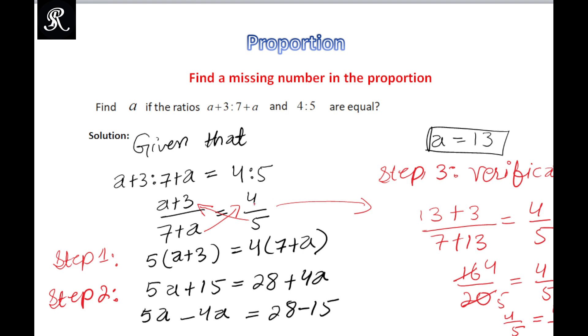So left-hand side is equal to right-hand side. This means this forms a proportion. As we have discussed in earlier videos, a proportion is where we compare two same ratios. So this means a equal to 13 is the solution to this proportion.